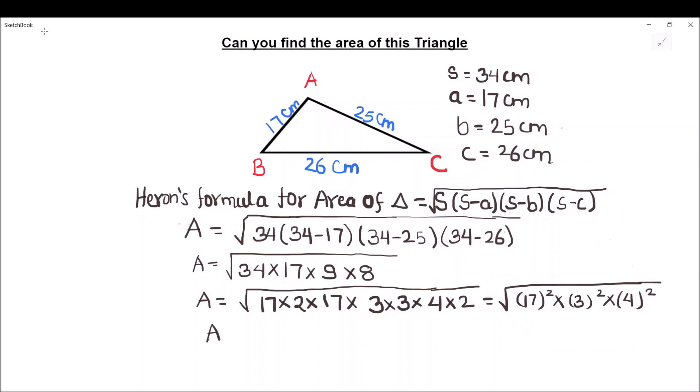Whole square root. As these numbers are squares and they are under the square root sign, the square and the square root get cancelled and all numbers will come out of the square root sign. We are left with 17 times 3 times 4, which is equal to 204. So the area of the triangle is 204 square centimeters.